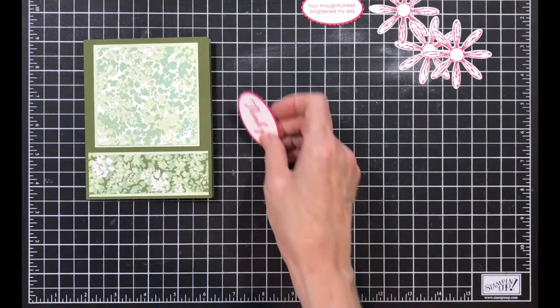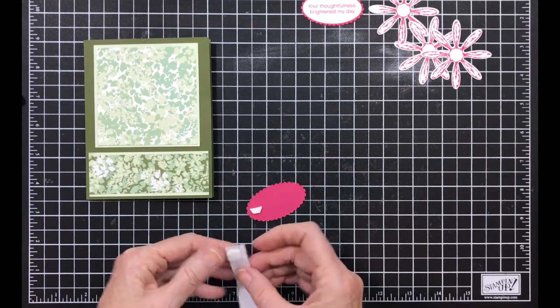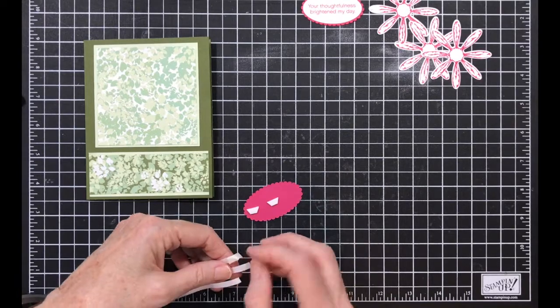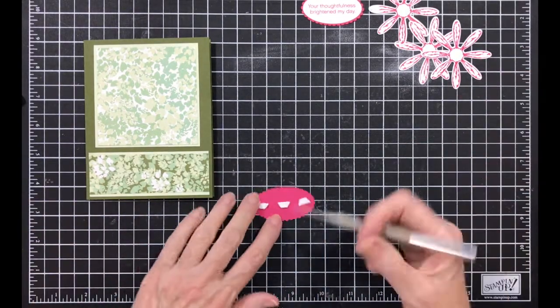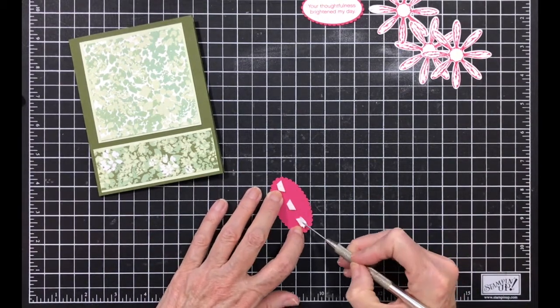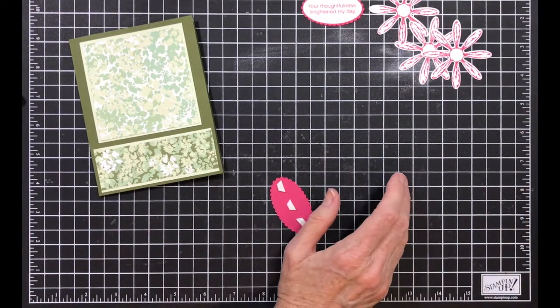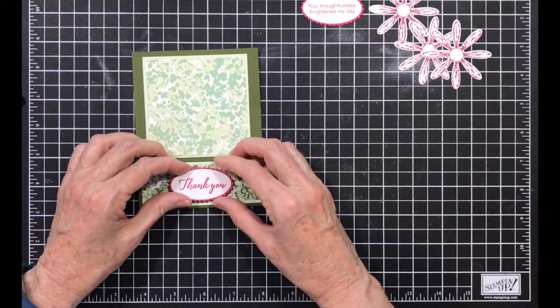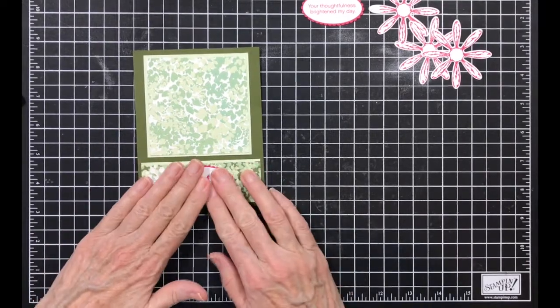This is going to go on with dimensionals. I am going to put them on and then we will get our daisy put together. And I think I am going to pull in something for the center of the daisy. I haven't decided.